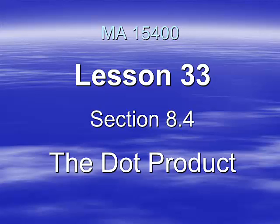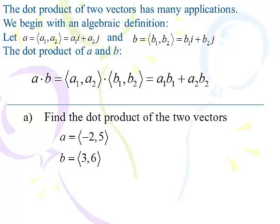Here we go with lesson 33, section 8.4, the dot product. This will be the only lesson we have on section 8.4. The dot product of two vectors has many applications, but we are only going to use it in this lesson to help us find the angle between two vectors.